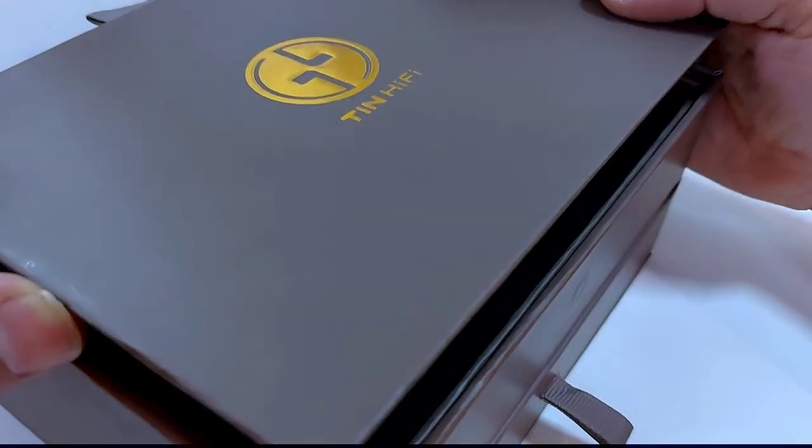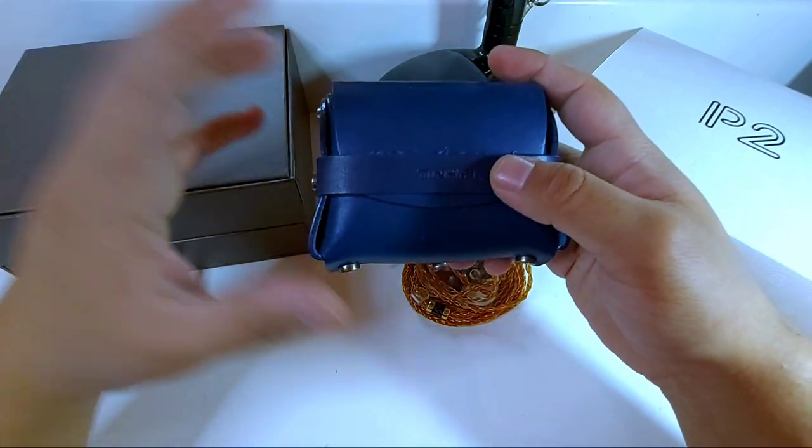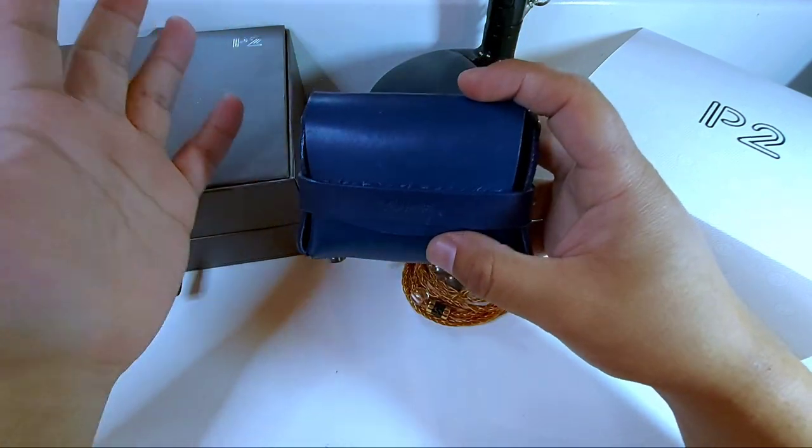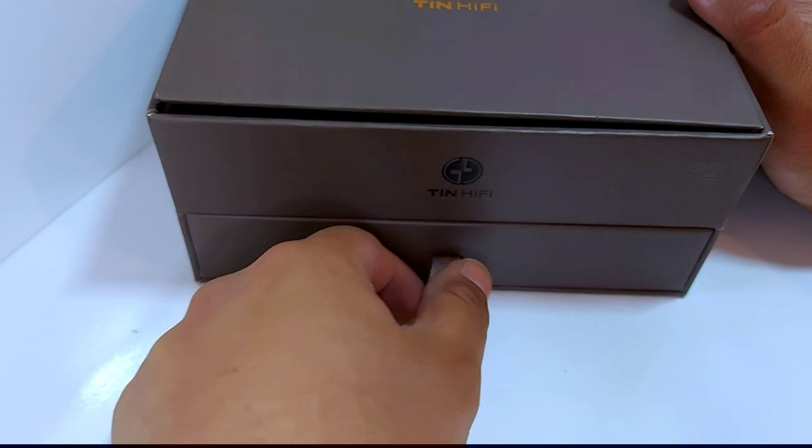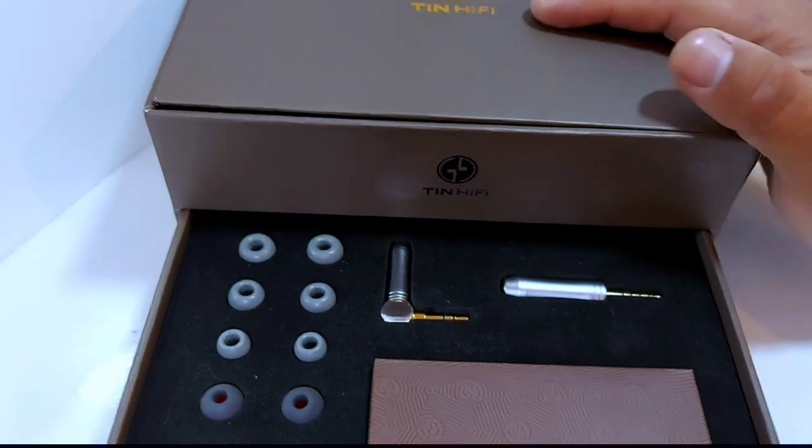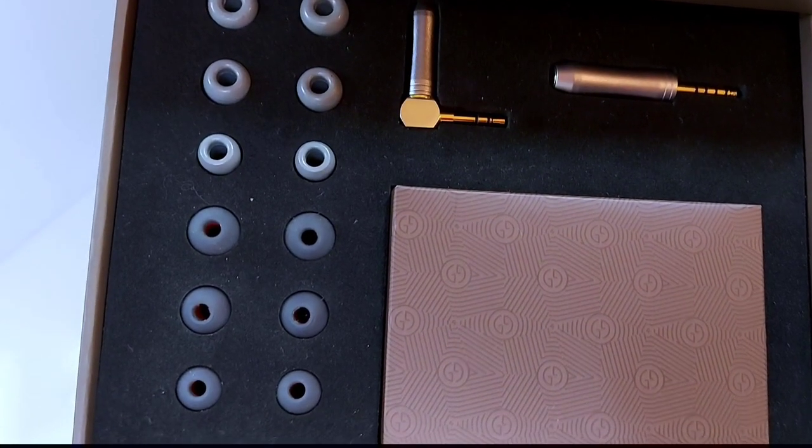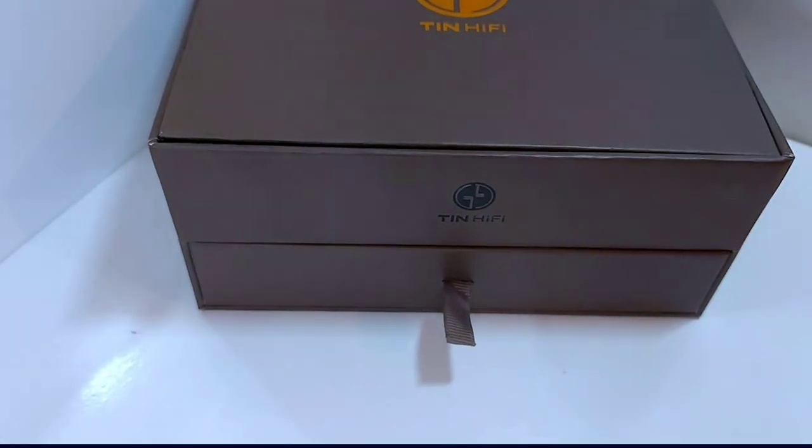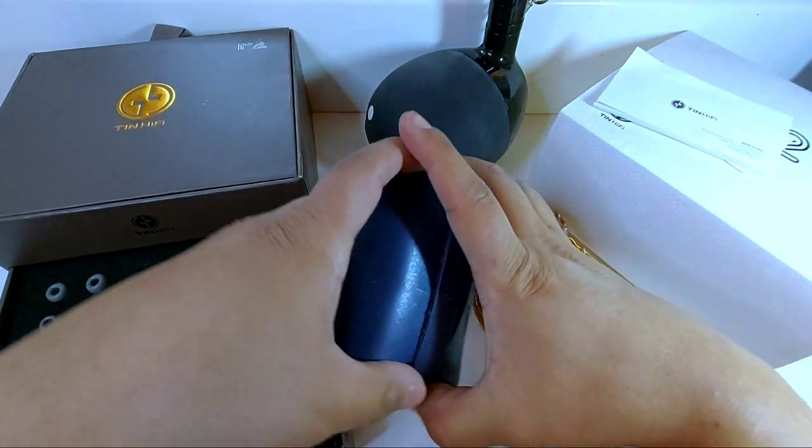La caja está dividida en dos partes. Si levantas esta pestaña, encontrarás las estrellas principales. Si la recorremos más hacia arriba, encontramos una bolsa de transporte que hace adecuadamente su función al guardar los auriculares y protegerlos. Es similar a los DUNU DK3001 Pro en este estilo de cartera.